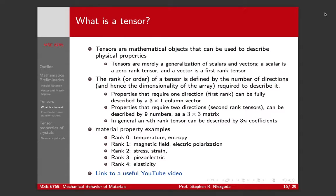The rank of a tensor is defined by the number of directions or the dimensionality of the array that you require to describe it. Properties that require one direction can be described by a column vector. Properties that require two directions or second rank tensors can be described by nine numbers as a three by three matrix. In general, an nth rank tensor needs to be described by three raised to the n coefficients.